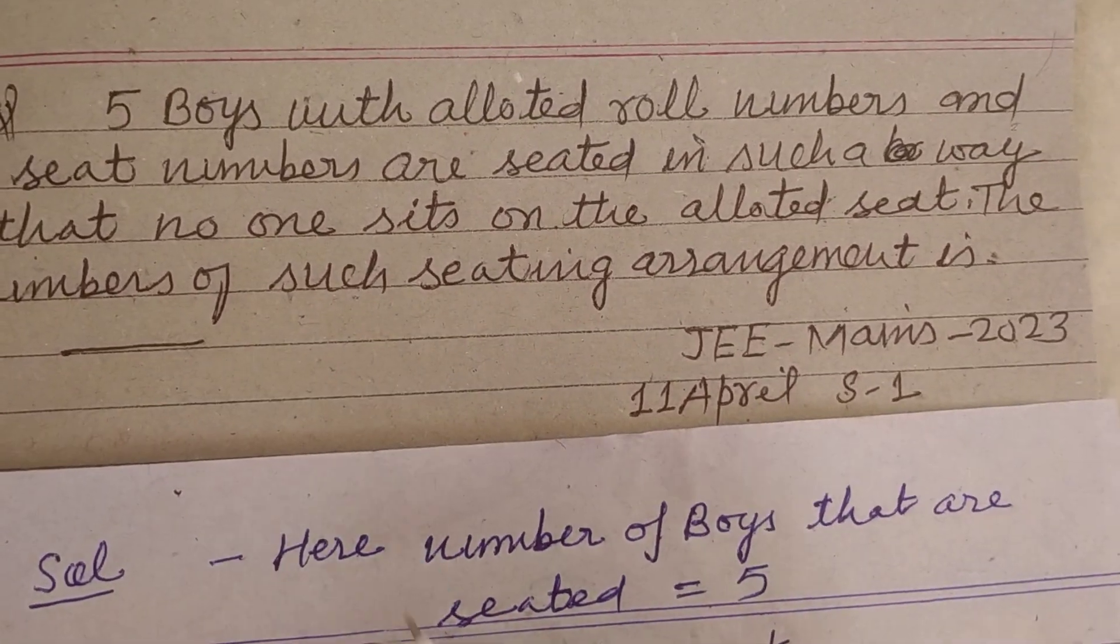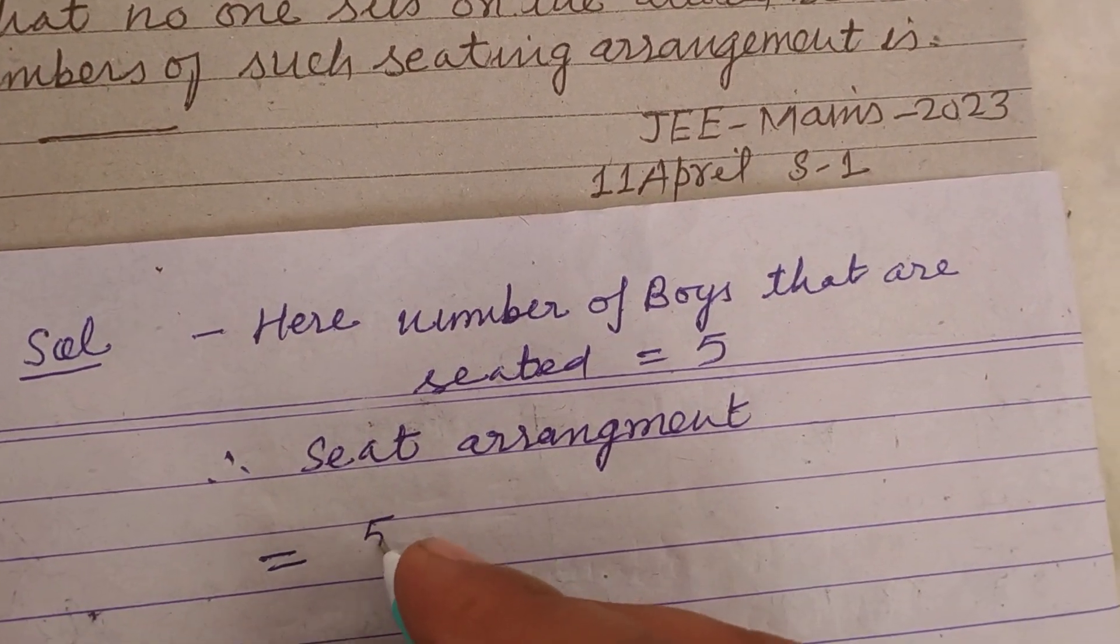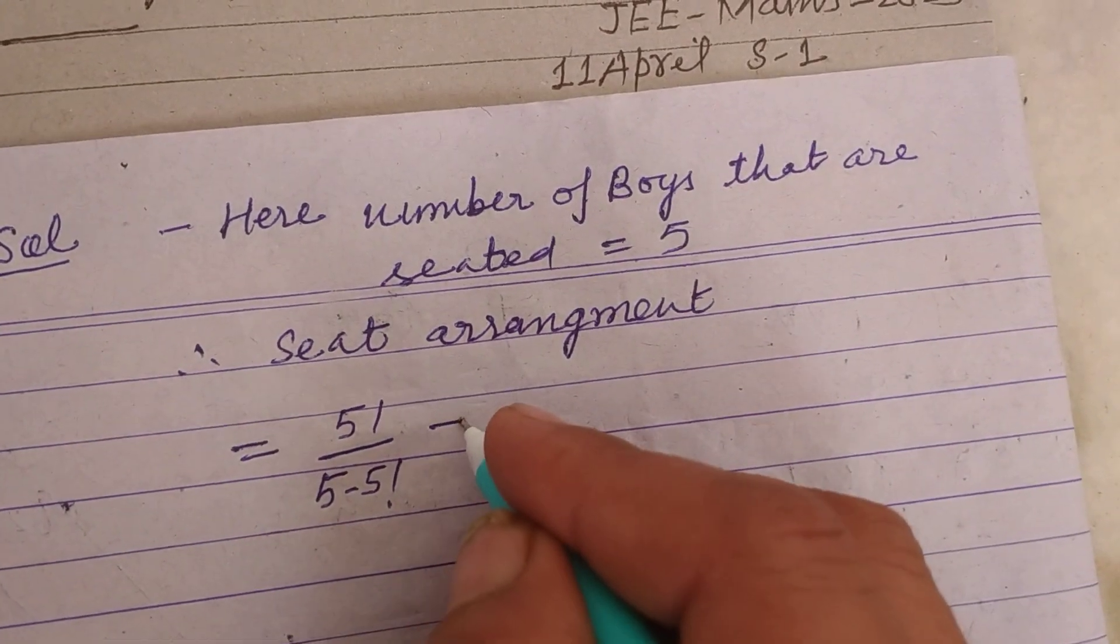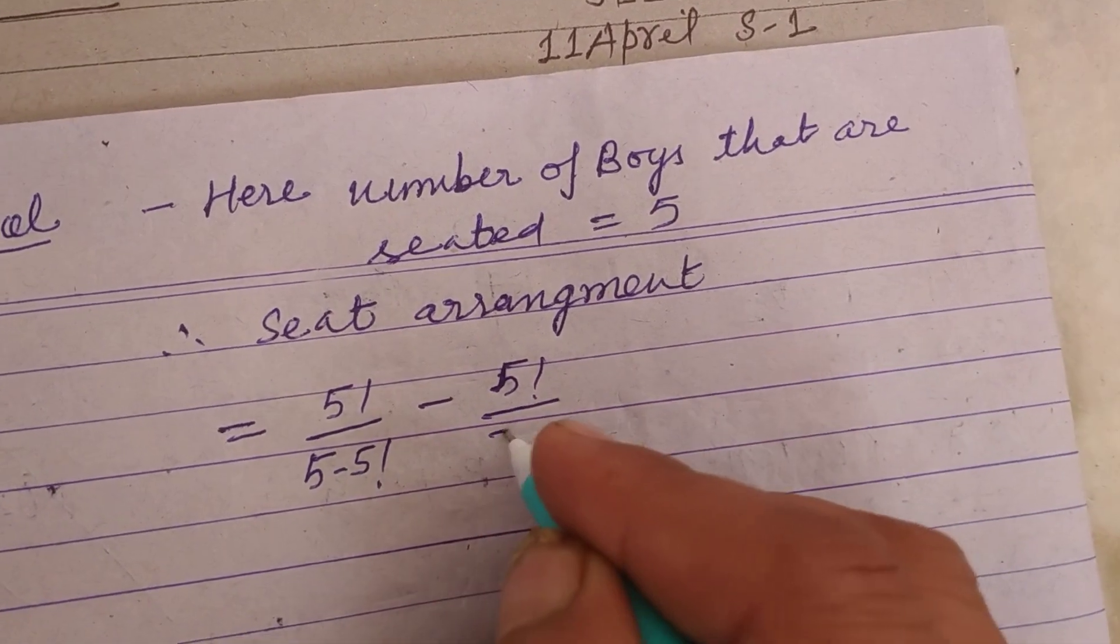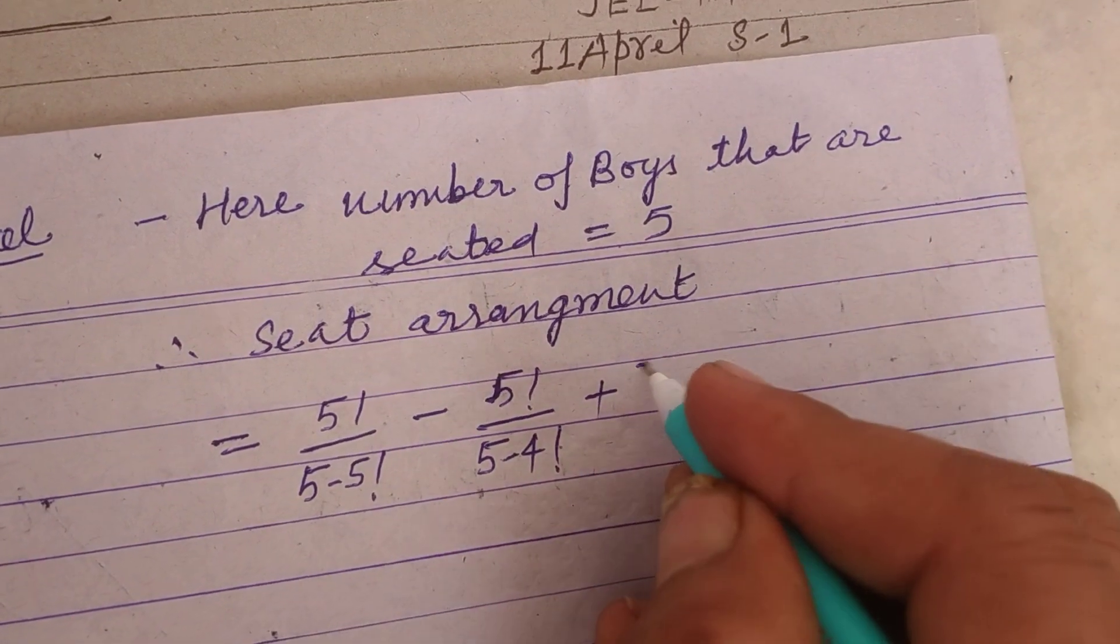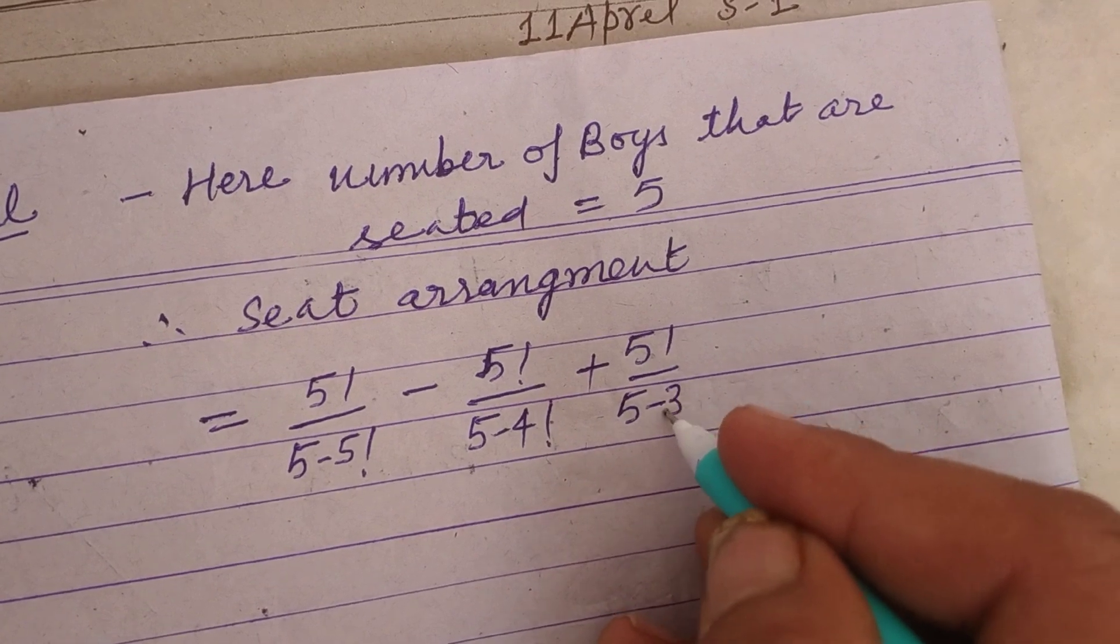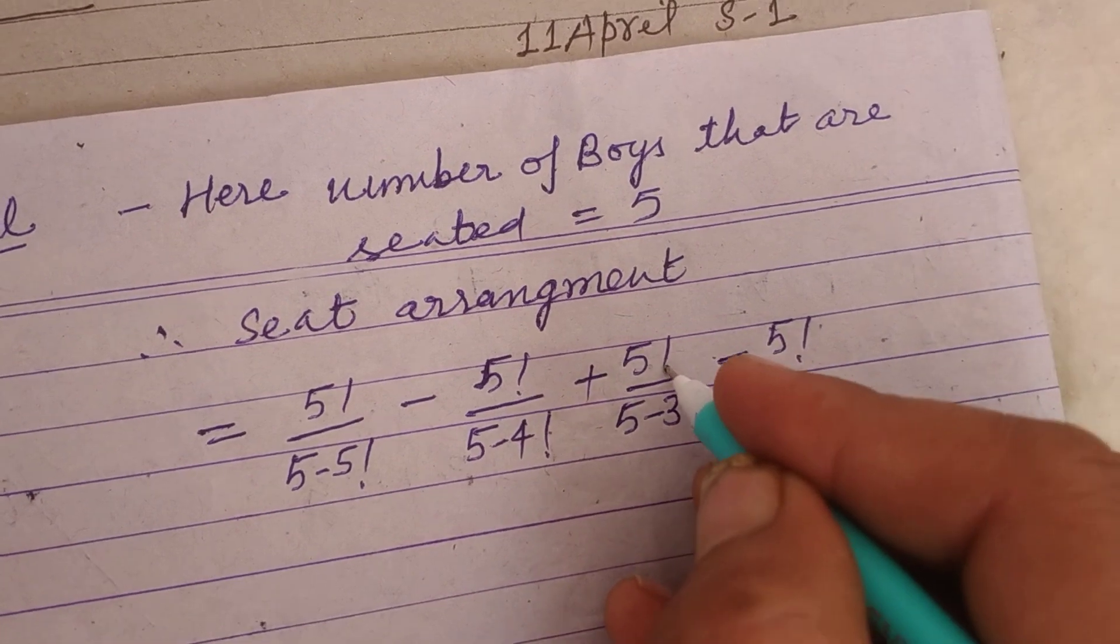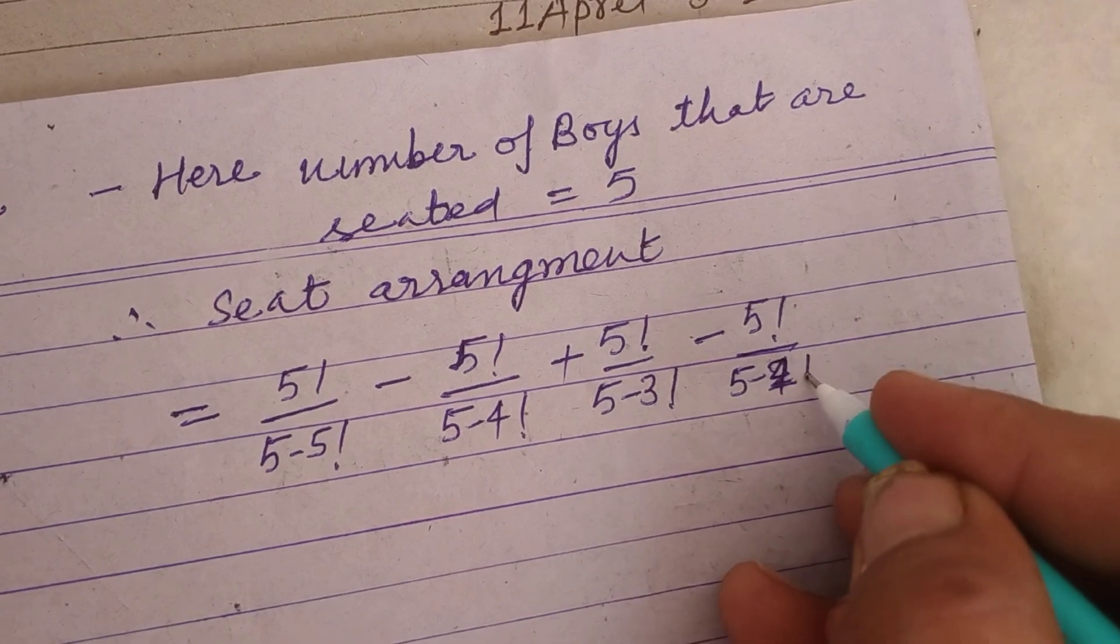In such cases when no one sits on the allotted seat, the formula is: 5! / (5-5)! minus 5! / (5-4)! again plus 5! / (5-3)! minus 5! / (5-2)!...